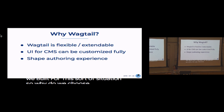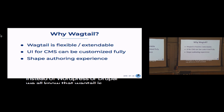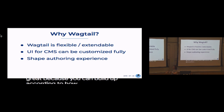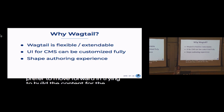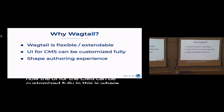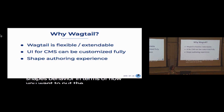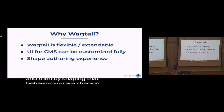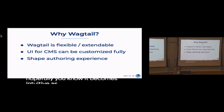So why did we choose Wagtail instead of WordPress or Drupal? We all know that Wagtail is flexible and starts from zero, which is great because you can build up according to how the client prefers to move forward in building content for the site. The UI for the CMS can be fully customized, and this is very important because it shapes behavior in terms of how you put content in — and by shaping that behavior, you are shaping the authoring experience.